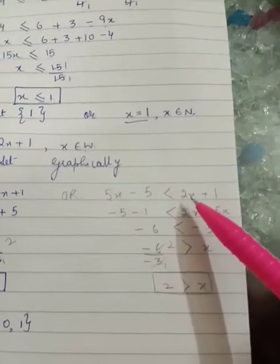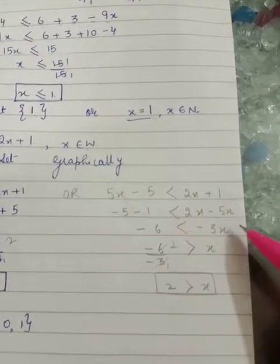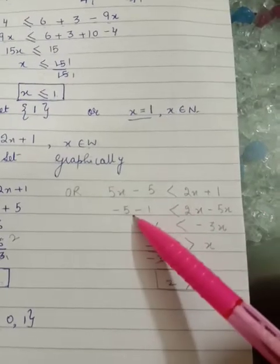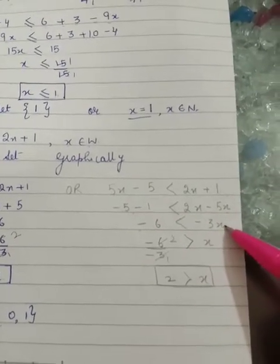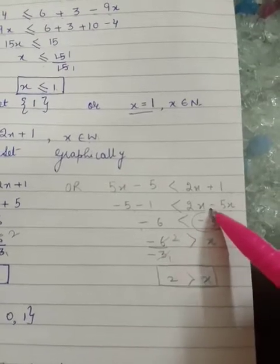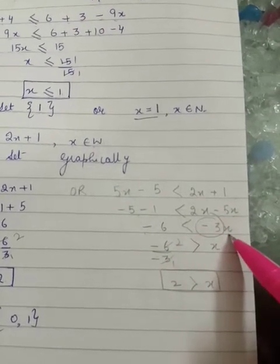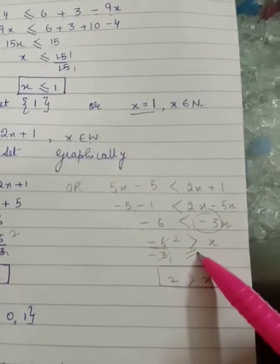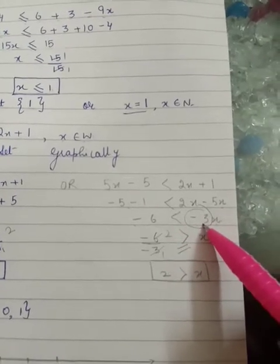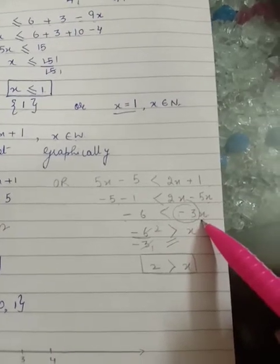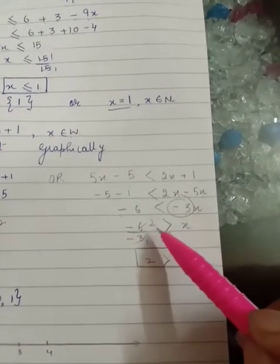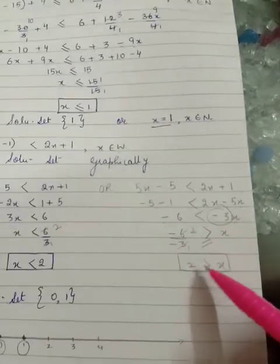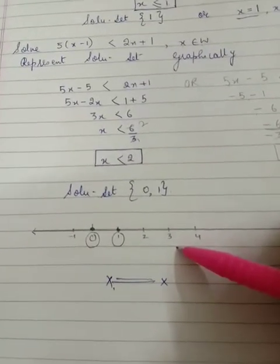Now let's look at an alternate method for the same equation 5x - 5 < 2x + 1. Instead of taking 2x to the left, take 5x to the right: -5 - 1 < 2x - 5x, giving -6 < -3x. When shifting a negative multiplier of the variable to the other side, the inequality sign flips — so dividing by -3 changes '<' to '>', giving x < 2. The solution set and number line remain the same.